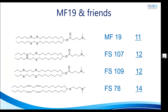The structures of the sulfur-containing lipids are shown in this slide: MF19, FS107, FS109, and FS78. MF19, FS107, and FS109 have lipophilic chains containing two sulfur atoms in the tail, with polar head groups the same as MC3, and were synthesized in 11 and 12 steps respectively. In these three lipids, the distance between sulfur atoms was varied to study efficacy in vivo. The last lipid, FS78, has a sulfur atom in the head part with the same tail as MC3 and KC2, and is afforded in 14 steps.